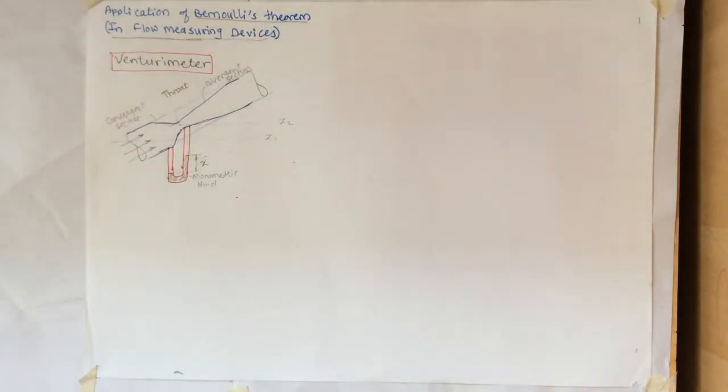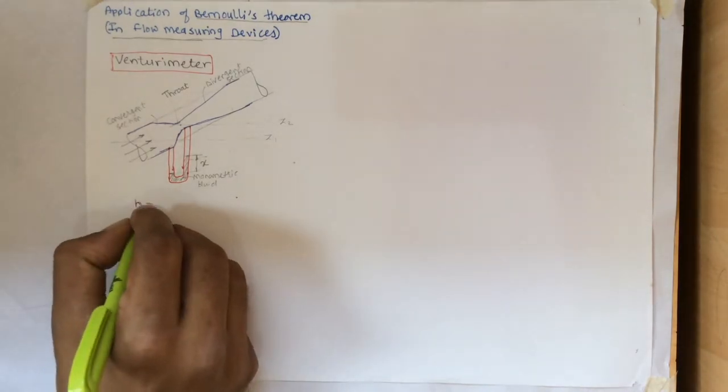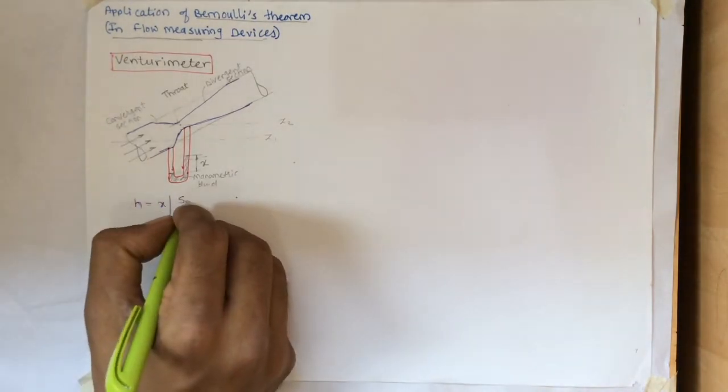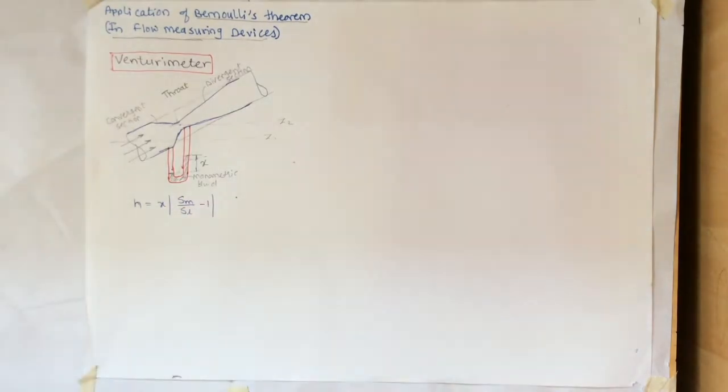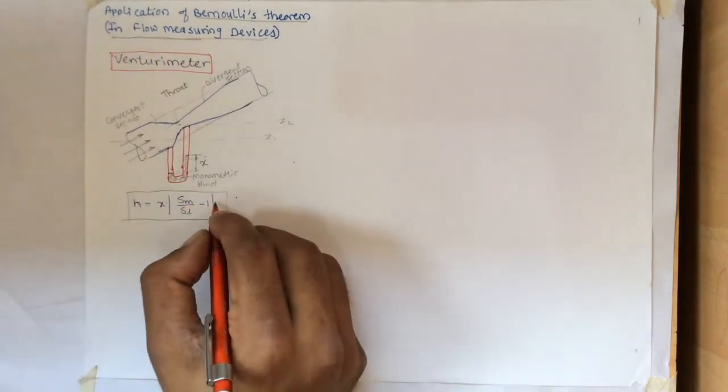As we have used some other fluid to measure the pressure in the manometer, we need to convert this reading X to the equivalent head of the fluid flowing into the Venturi meter. X is the pressure head in terms of manometric fluid, and H will be the pressure head in terms of the fluid flowing through the pipe. So it can be given as H equals X times Sm divided by Sl minus 1.